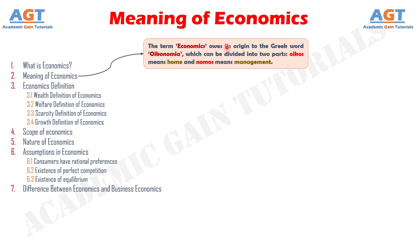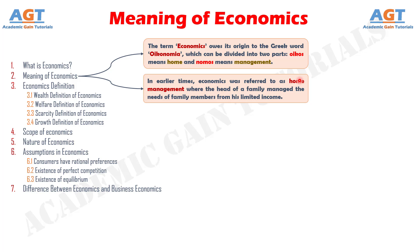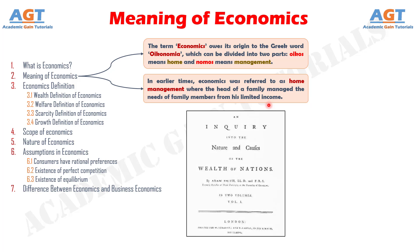The term economics owes its origin to the Greek word oikonomia, which can be divided into two parts: oikos means home, and nomos means management. Thus, in earlier times, economics was referred to as home management, where the head of a family managed the needs of family members from his limited income. Till the nineteenth century, economics was known as political economy. The book named An Inquiry into the Nature and Causes of the Wealth of Nations, published in 1776, usually abbreviated as The Wealth of Nations, by Adam Smith is considered as the first modern work of economics.